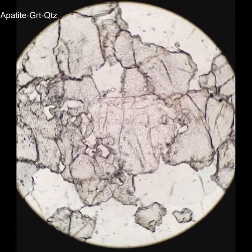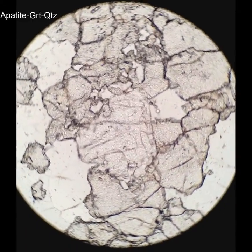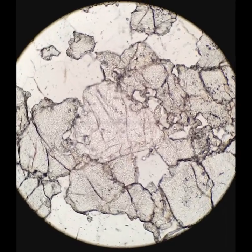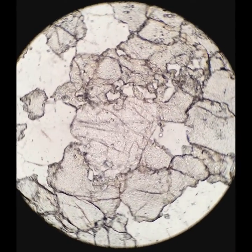I often tell my students that apatite looks like garnet, except it isn't, and this is a case in point. The central grain is actually apatite, but everything else around it is garnet.